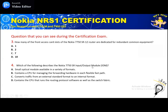Question three: how many of the front access cards of the Nokia 7750 router are dedicated for redundancy? As already discussed, the SF/CPM is the controller card and there is always a redundant copy. So the answer is B — 2 cards are dedicated for redundancy.